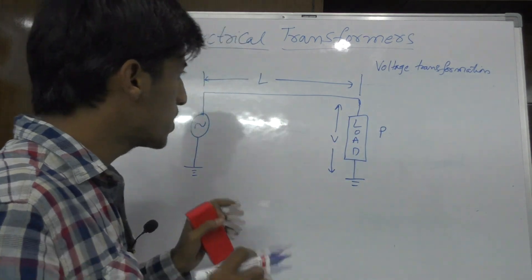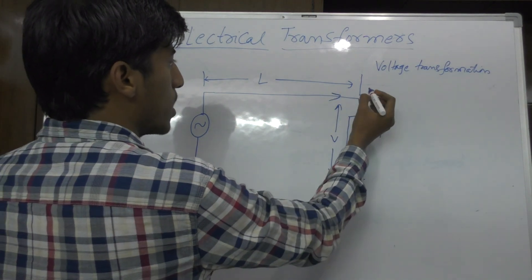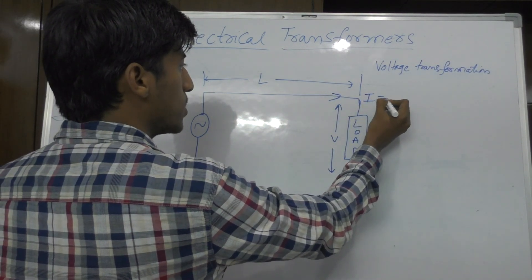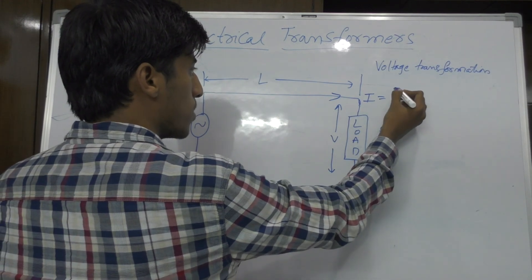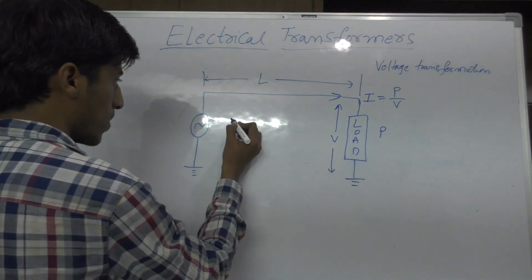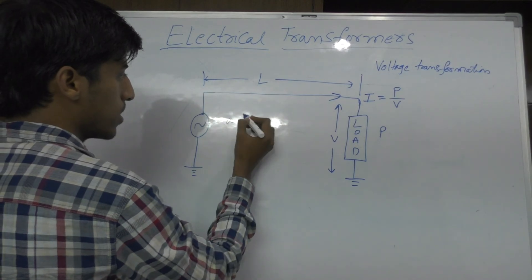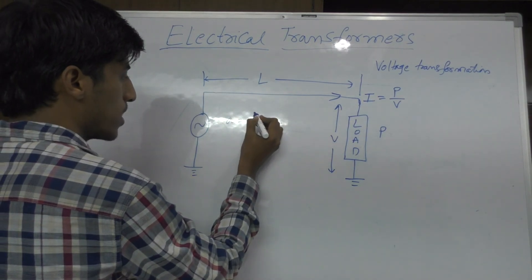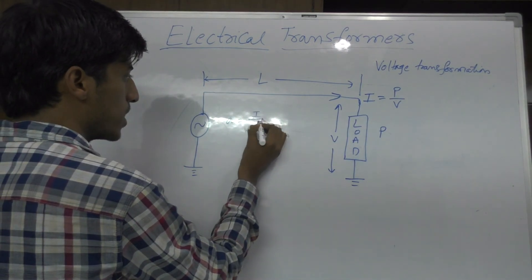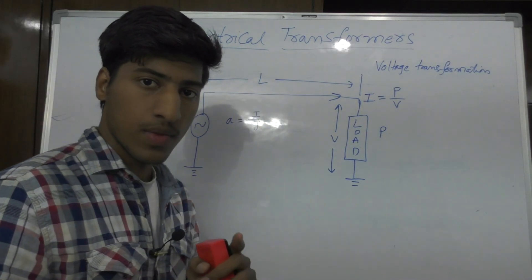Now from this I can get the value of current I as I equals power P by voltage V. And now the area of cross section of the conductor used here, I can write this as I by J. I is the current and J is the current density.